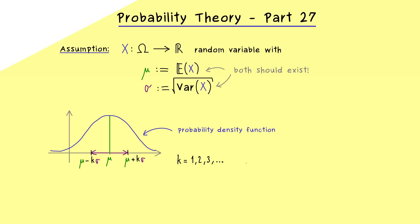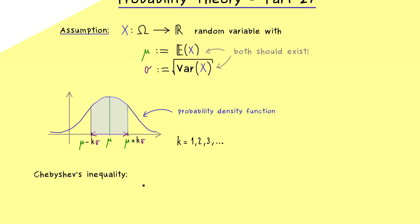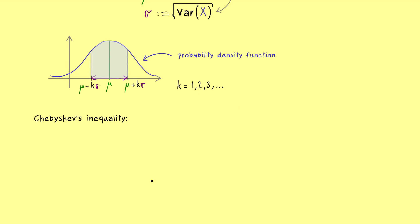However, no matter which interval we choose here, the common question is always: what is the probability to lie inside this interval? Hence, in the case of a probability density function, the question is, what is the ratio of this area here to the whole area? And you might already see that we can estimate that in the general case by using Chebyshev's inequality. Therefore, the first thing we should do now is to recall this important inequality.